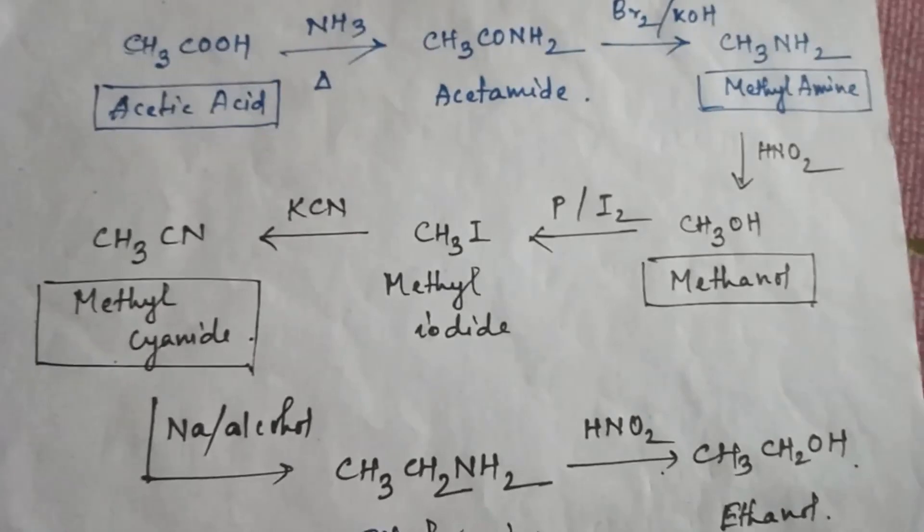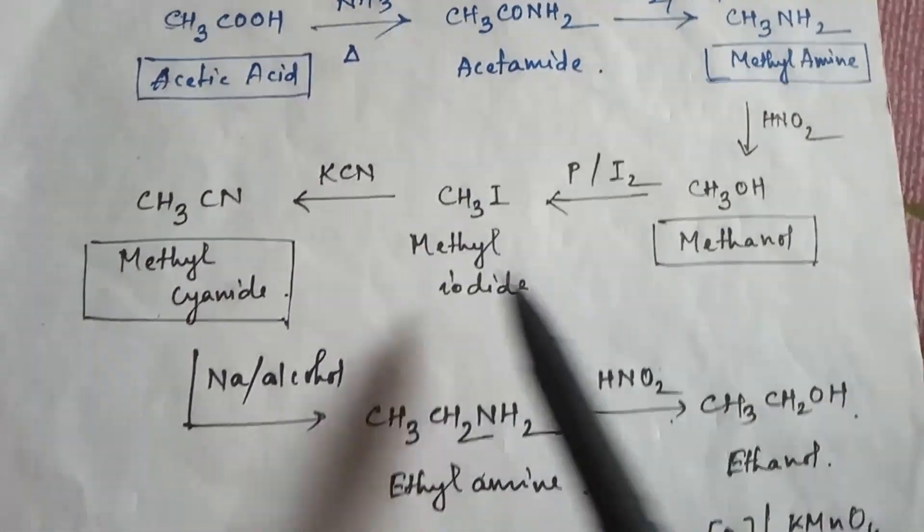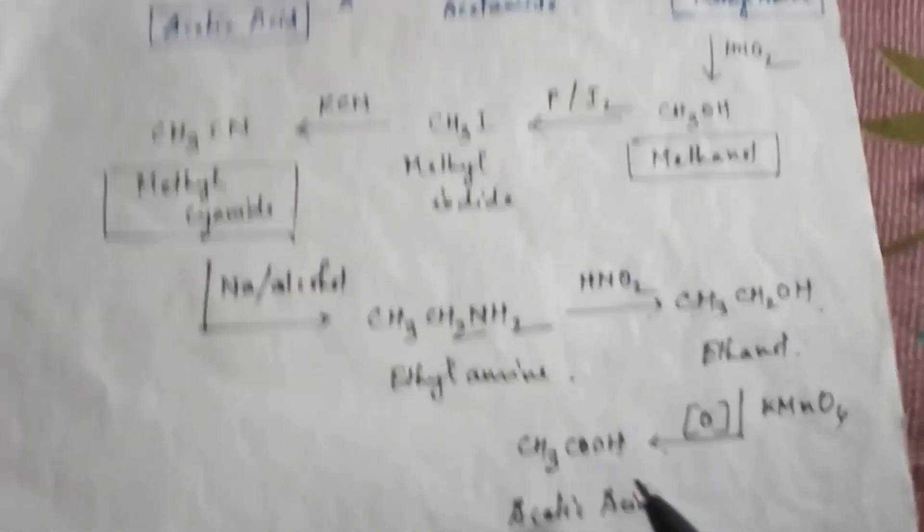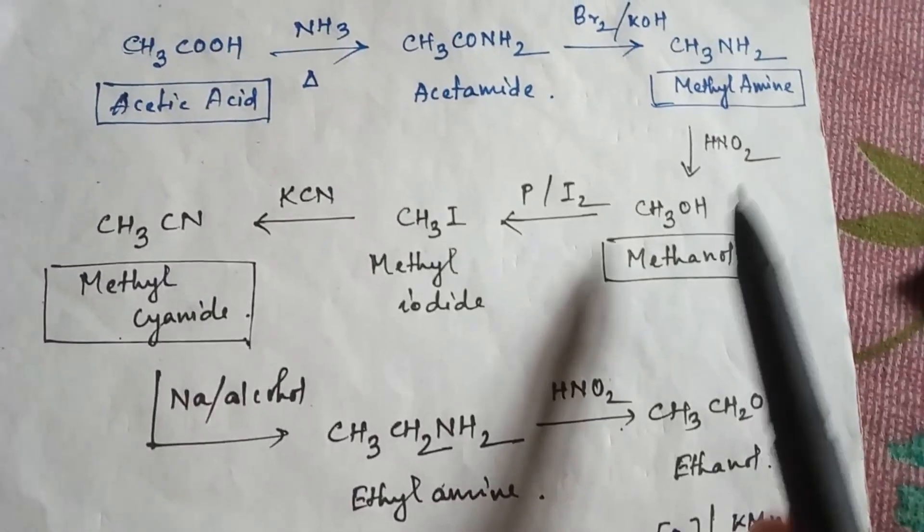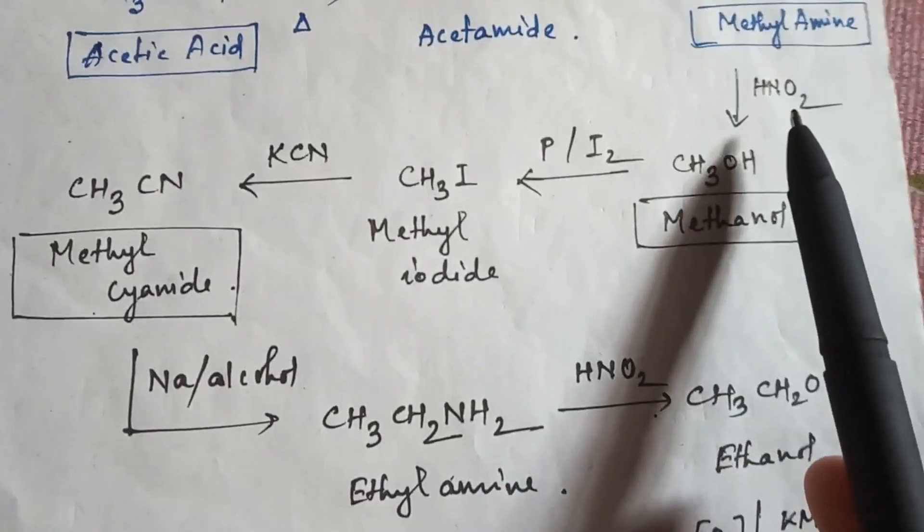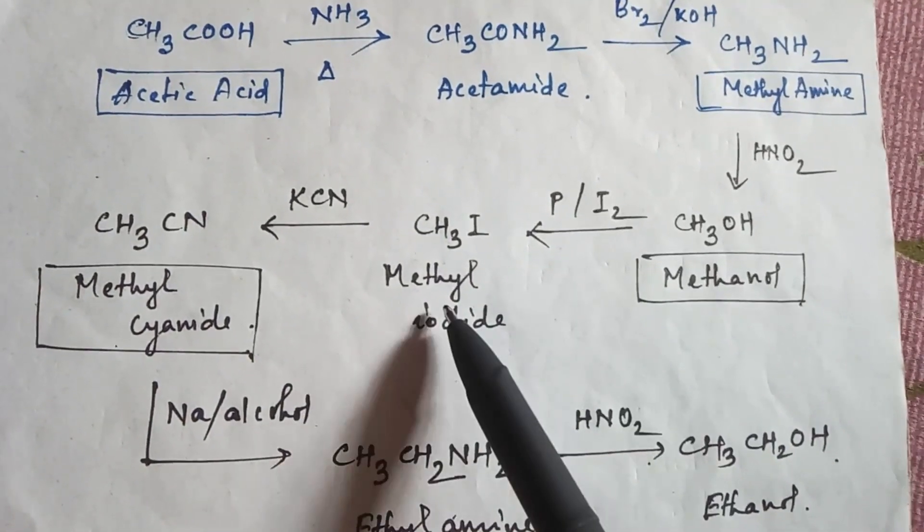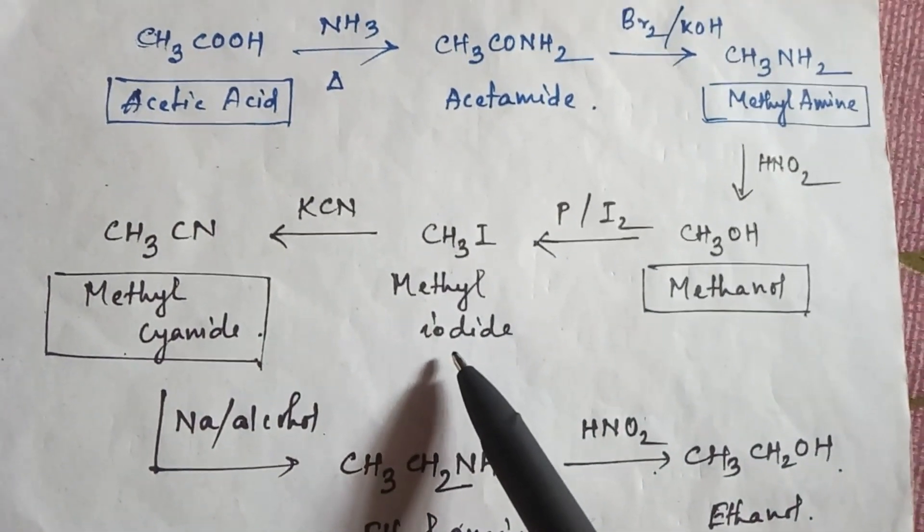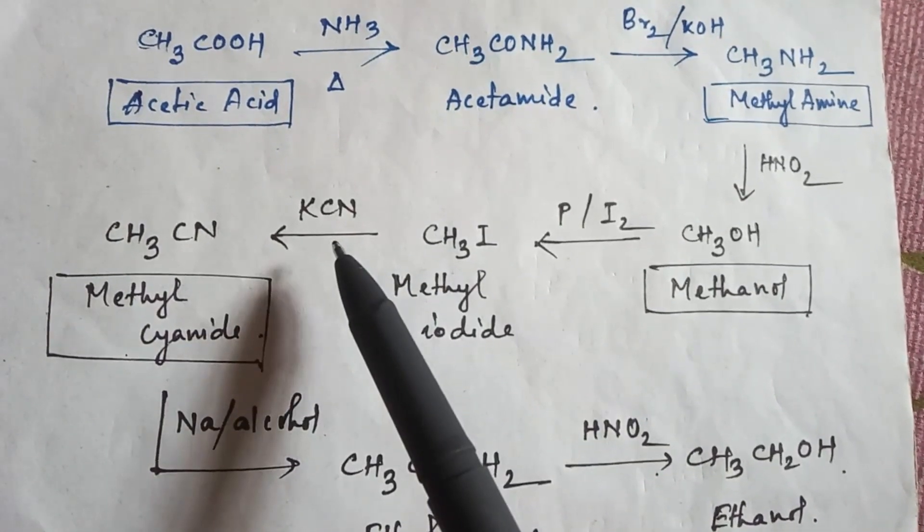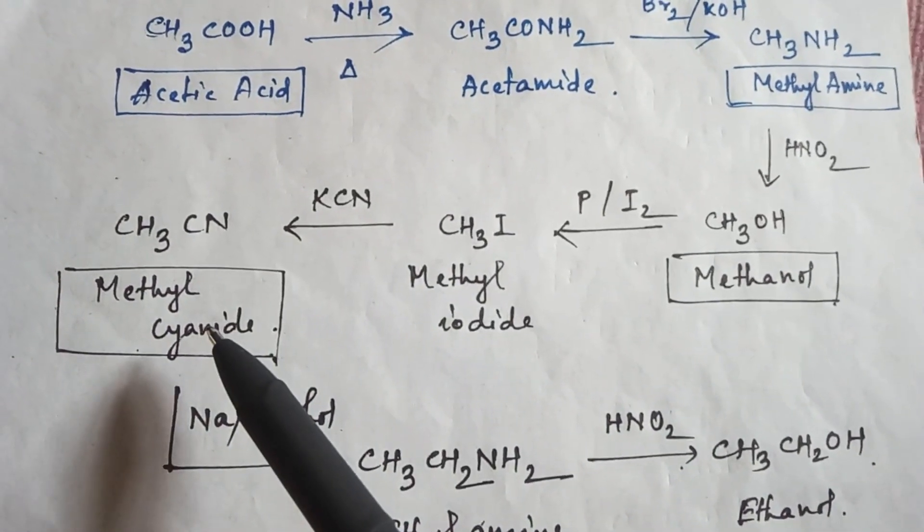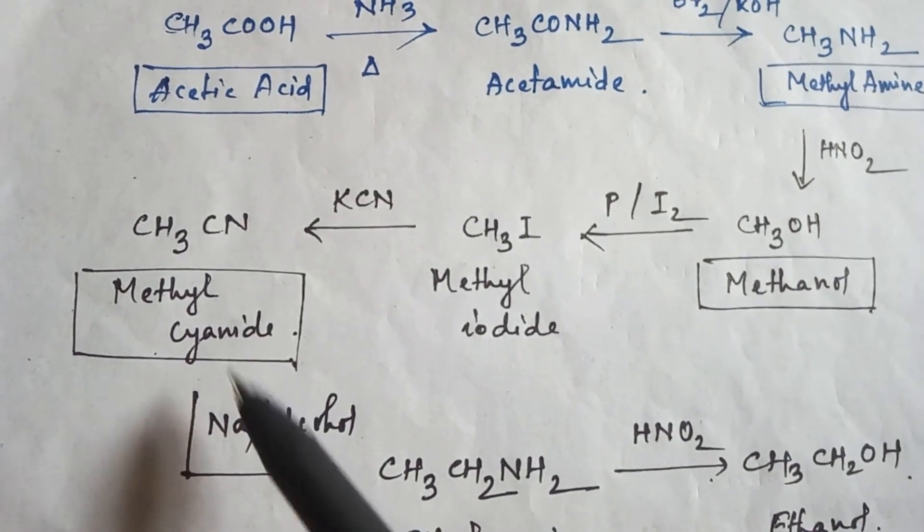So you can see from methyl amine to acetic acid: first you need to add nitrous acid to convert it to methanol, then phosphorus and iodine to convert it into methyl iodide, then add potassium cyanide to convert into methyl cyanide.